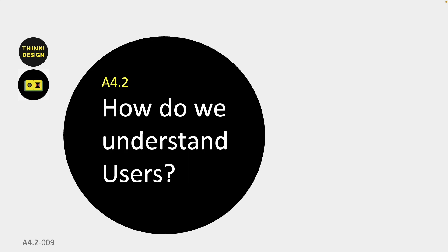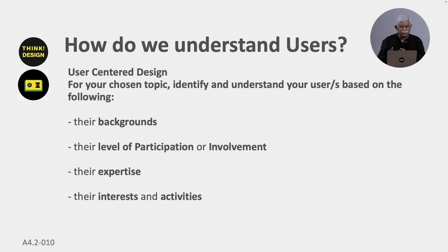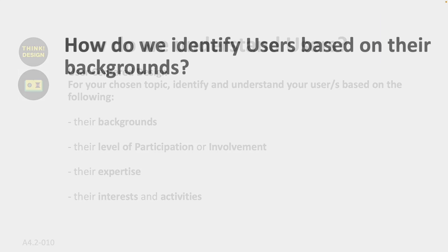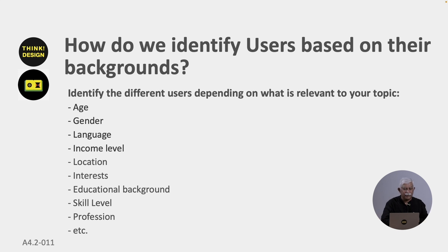How do we actually understand users? For your chosen topic, you can look at their backgrounds — their level of participation or involvement, whether they are directly or indirectly connected with your topic, their level of expertise, and their interest and activities. Backgrounds include age group, gender, languages spoken, income levels, location, interests, educational background, skill levels, and profession.